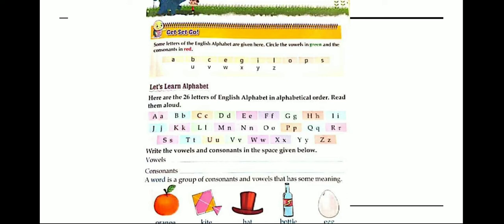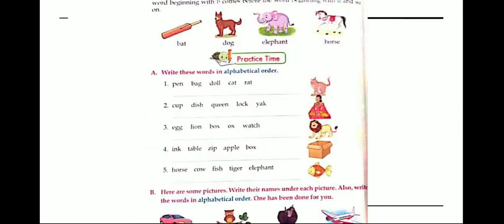And other letters are called consonants. A word is a group of letters that are written in a certain order. Words are made up of vowels and consonants.